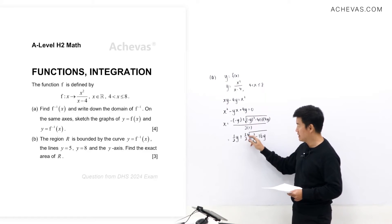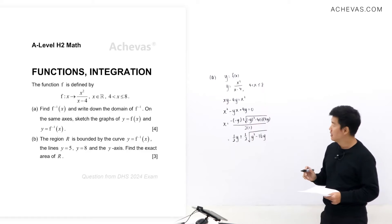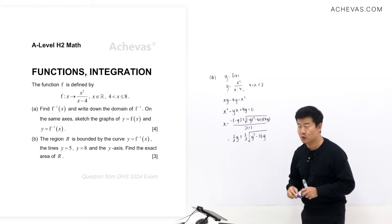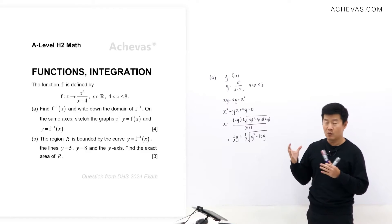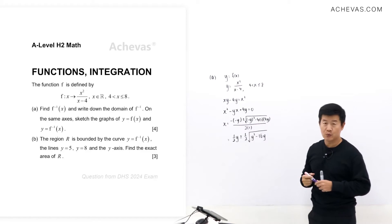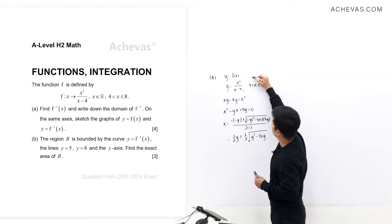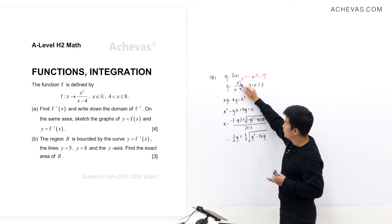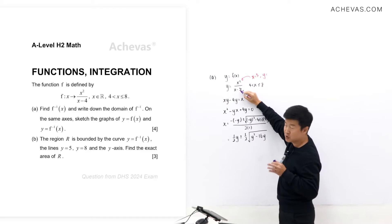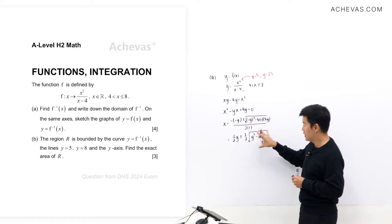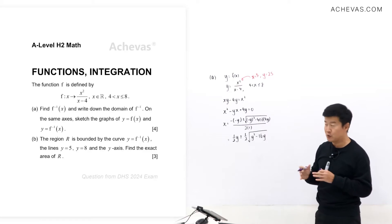I find it a bit tough to decide whether to use plus or minus based on just the expression itself, so I did a bit of testing. Since we are working with a one-to-one function, I pick an x between 4 and 8 — for example, x = 5. Substituting into f(x), I get y = 25/1 = 25.